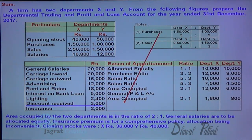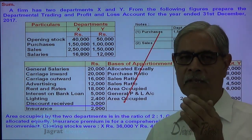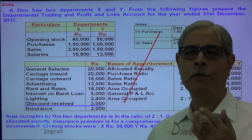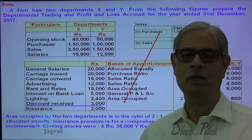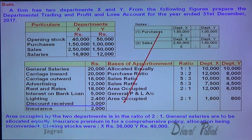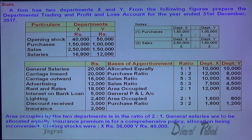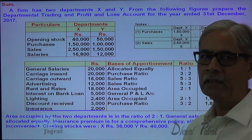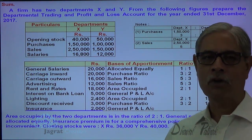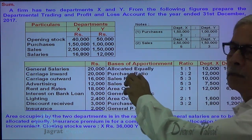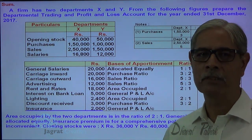Discount received is distributed in the purchase proportion, because we receive discount when we pay suppliers from whom goods were purchased on credit. So discount received is distributed in ratio 3:2, giving 1,800 and 1,500. Insurance is inconvenient to allocate, so it goes to the general profit and loss account. After explaining the mode of apportionment, now I want to prepare the trading and profit and loss account.